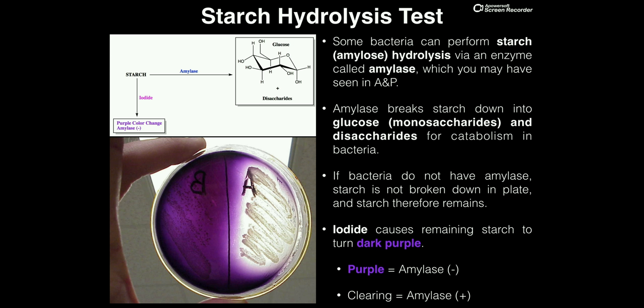Let's think about this logically. If you have a species of bacteria that does produce amylase, the starch present on the plate would be broken down — there wouldn't be starch there anymore. But if the bacteria does not produce amylase, it's not going to be breaking down the starch, so that starch will remain on the plate. What the iodide does is react with the starch and causes it to turn dark purple. If there's starch remaining on one side of the plate, the iodide causes it to change to a dark purple color.